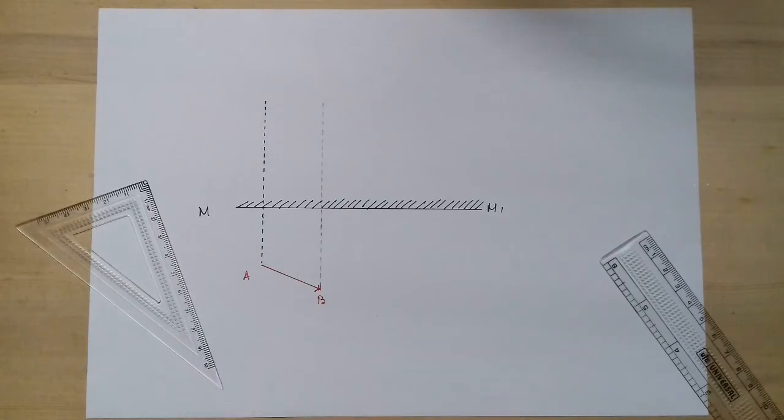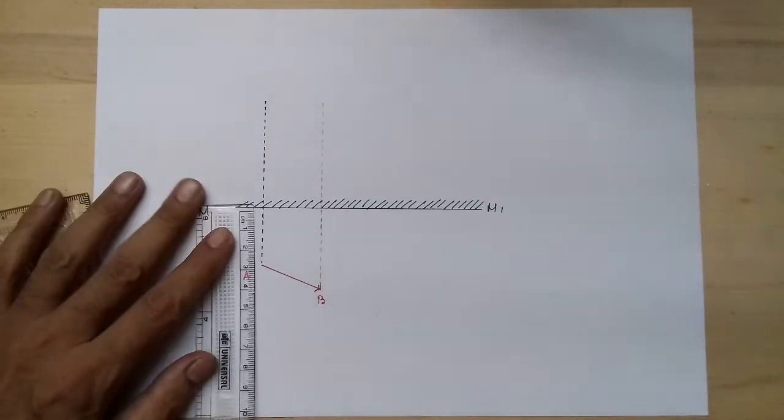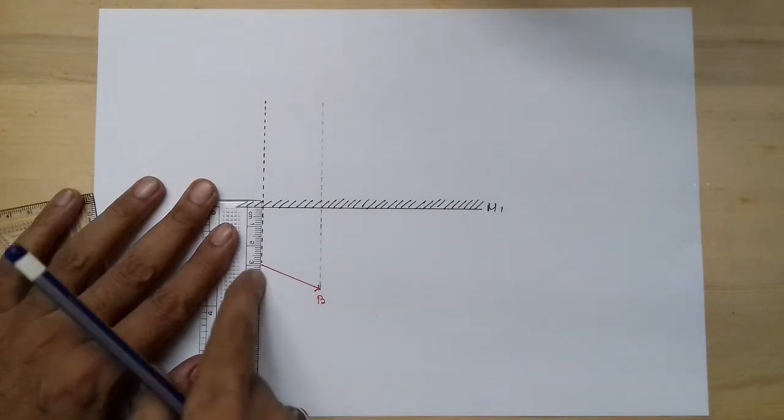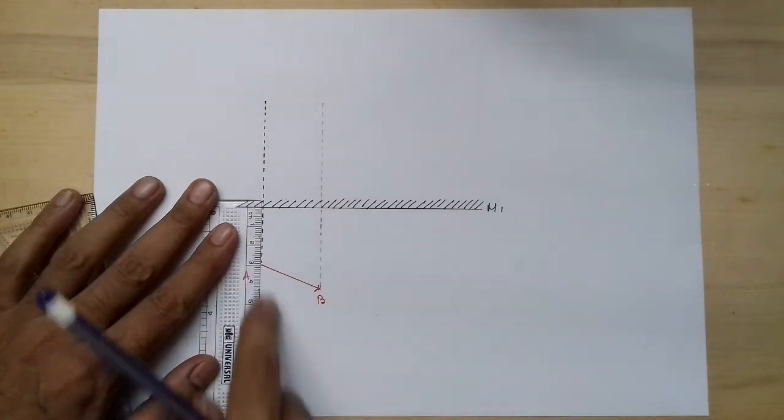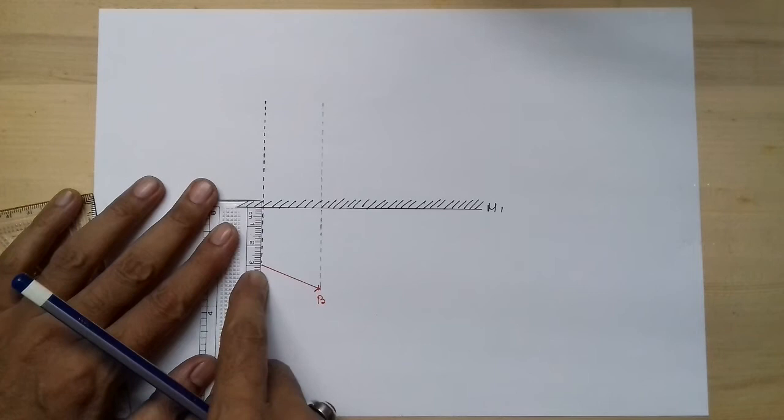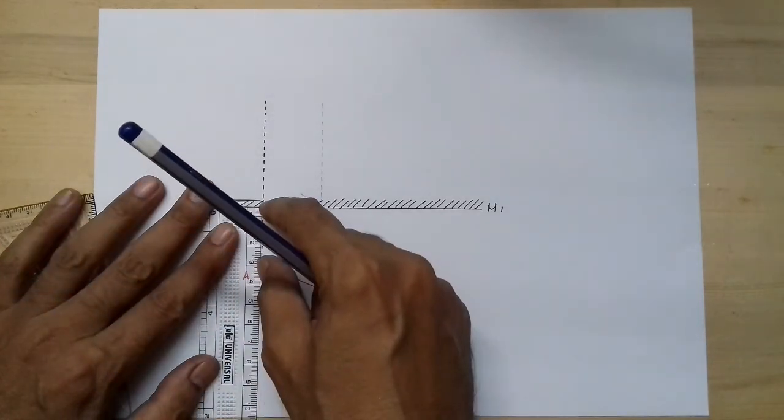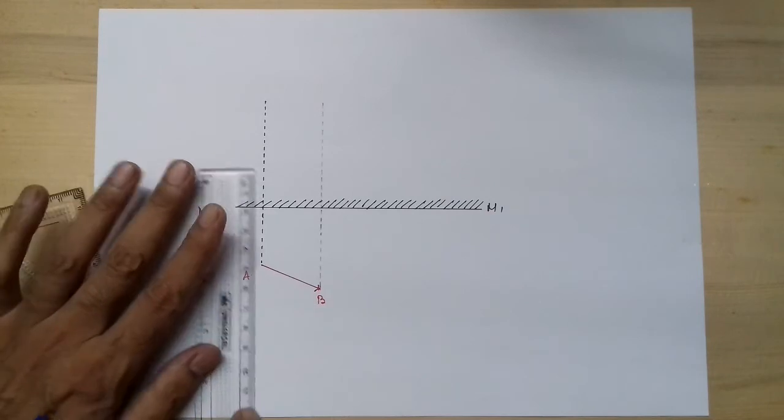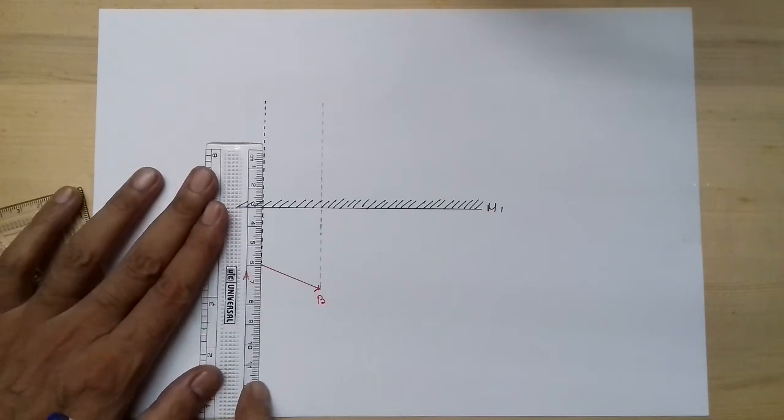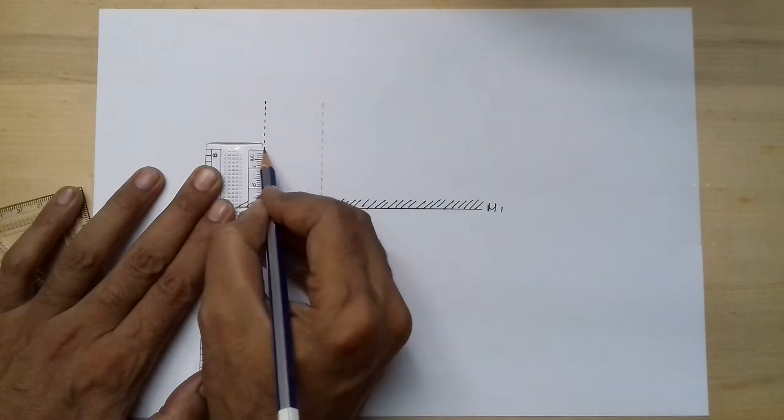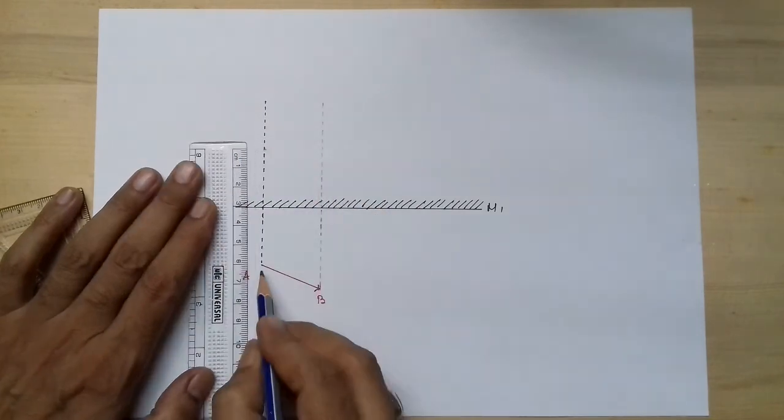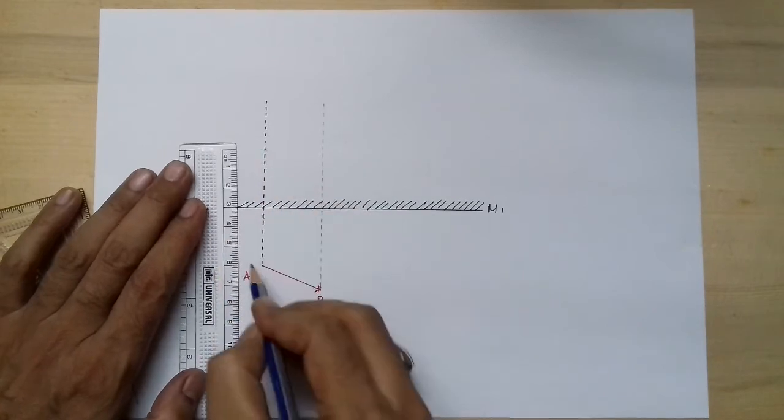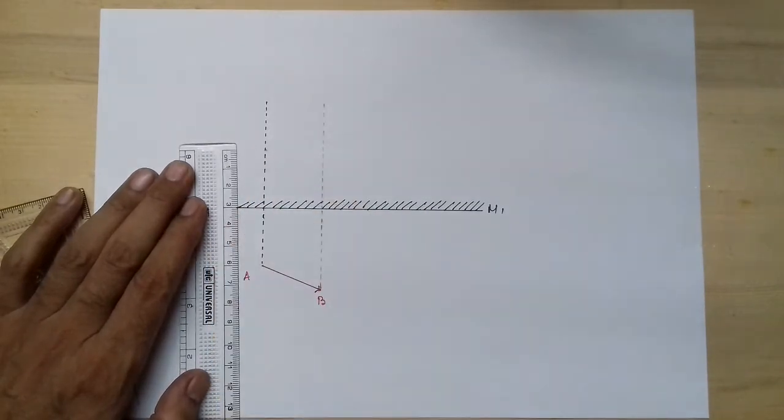Now I will measure this distance. Remember, if the scale does not give you the exact measurement—here it is giving the exact measurement—use the compass if needed. It is giving 3 centimeters, so 3 centimeters on this side and 3 centimeters on that side also. Here, this point is the image of point A, so let me write this as A'.